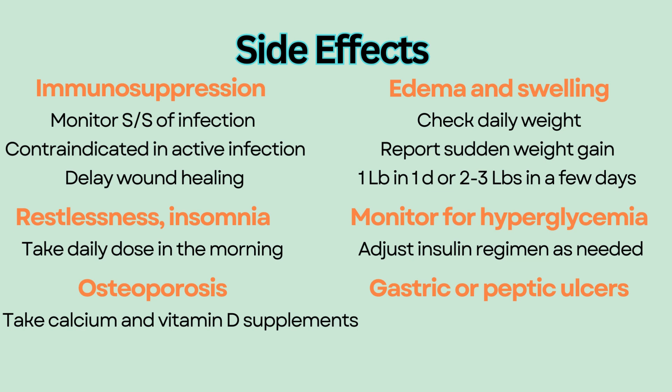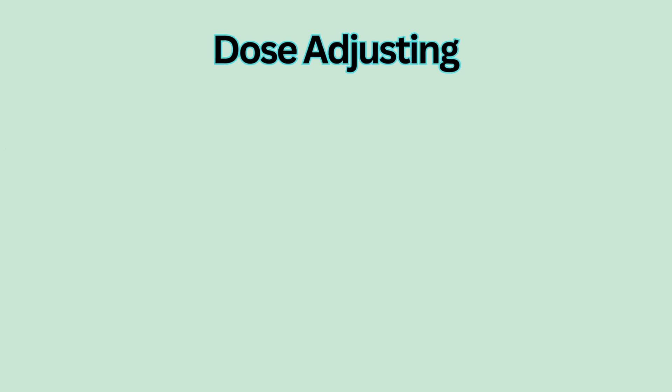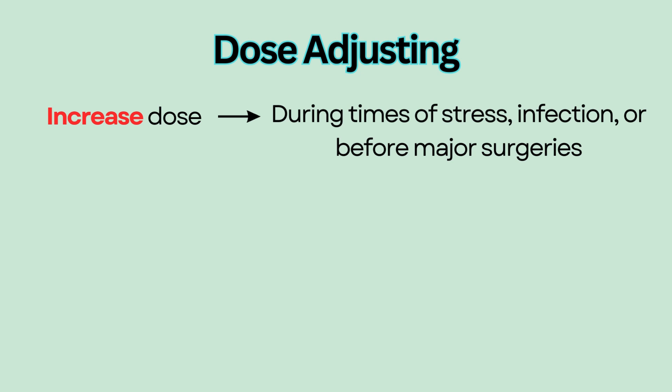Steroids should be taken with food to prevent gastric or peptic ulcers. A PPI such as Protonix may be prescribed to prevent ulcers. Avoid taking aspirin or NSAIDs concurrently because they both increase the risk of GI bleed. Steroids also carry an increased risk for cataracts with long-term use. During times of stress, infection, or before major surgeries, doses of steroids may need to be increased.